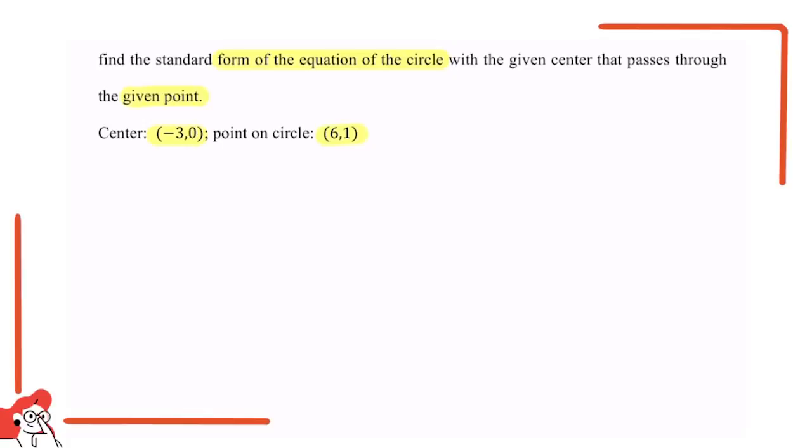So firstly we should know the standard form of the equation of a circle, which is (x minus the center point x) squared plus (y minus the center point y) squared equals the radius squared.